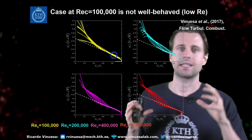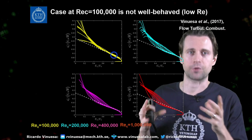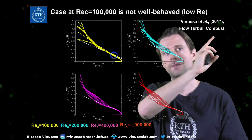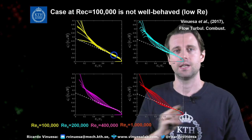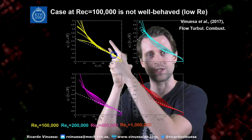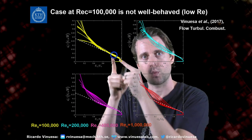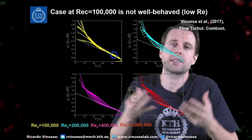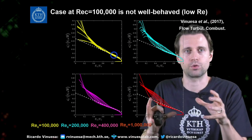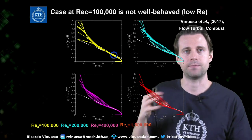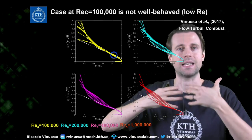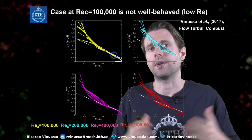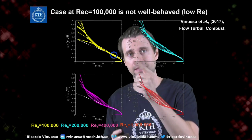The 100,000 Reynolds number case behaves differently, as identified by another criterion based on diagnostic scaling, documented in Flow, Turbulence and Combustion. The 100k wing has a region where profiles do not collapse — unlike all other wings — showing it is not well-behaved because the Reynolds number is too low. Even with tripping to force transition, the development is not consistent with a well-behaved turbulent boundary layer. The other wings show behavior consistent with standard turbulent boundary layers subjected to strong pressure gradients.